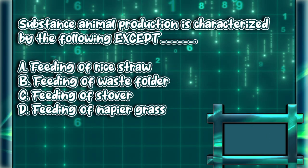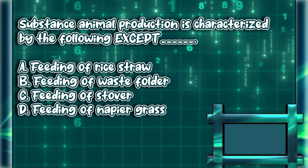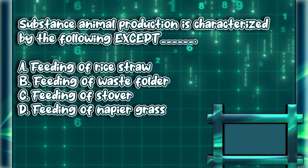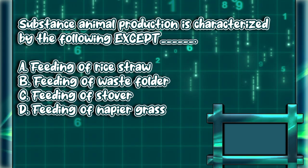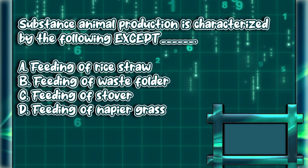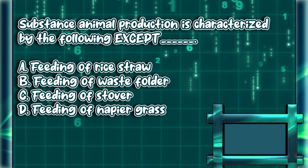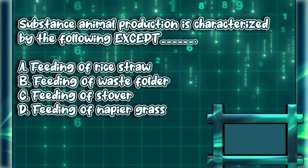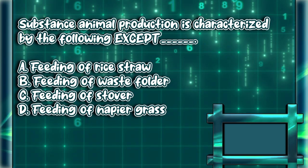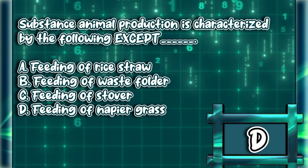Subsistence animal production is characterized by the following, except: A. Feeding of rice straw. B. Feeding of waste fodder. C. Feeding of stover. D. Feeding of napier grass. The answer is letter D.